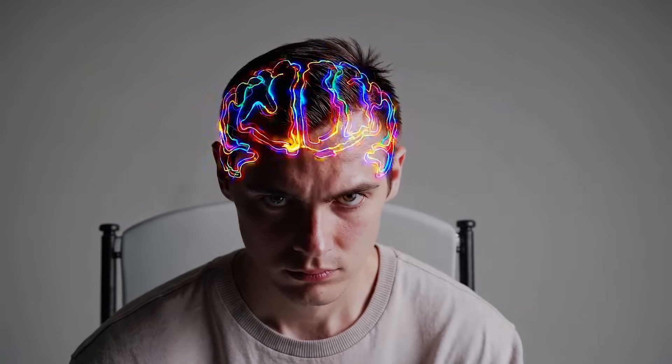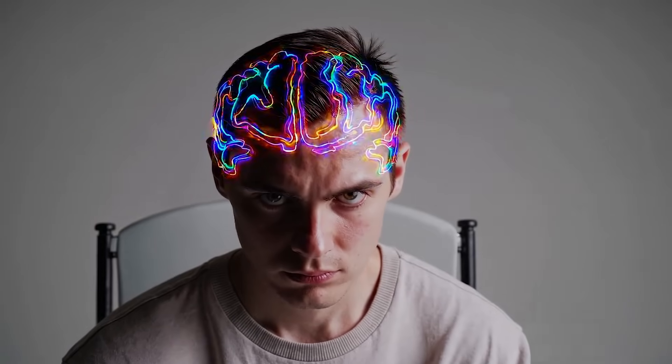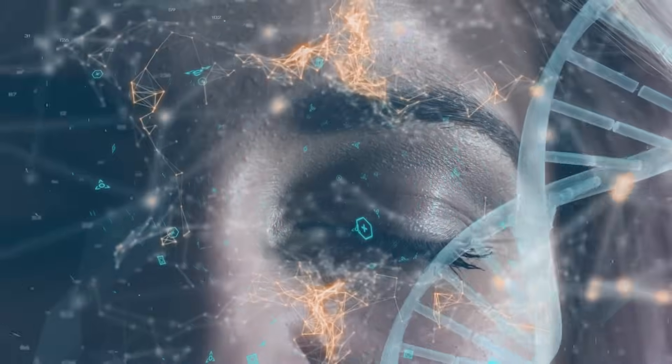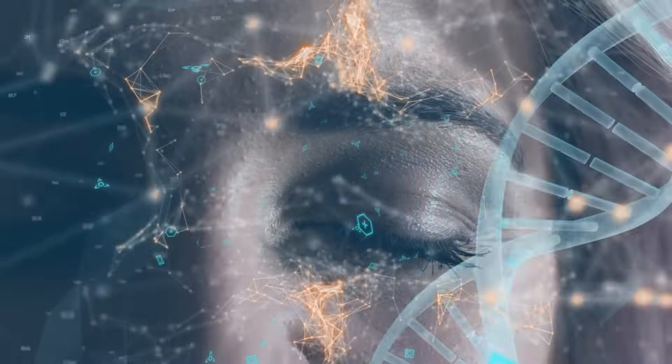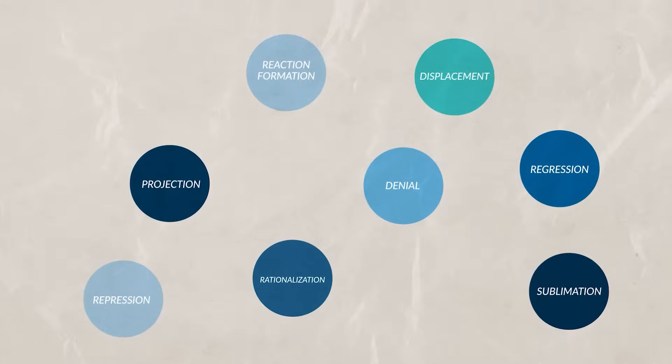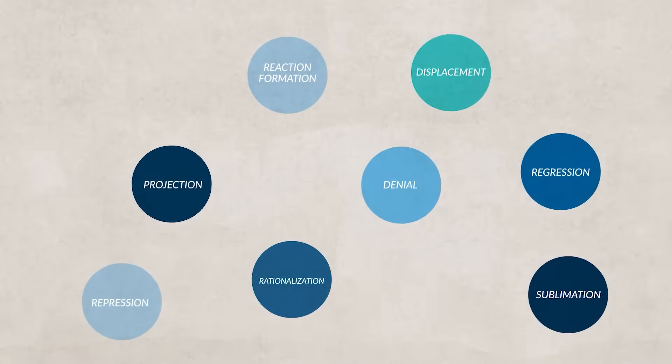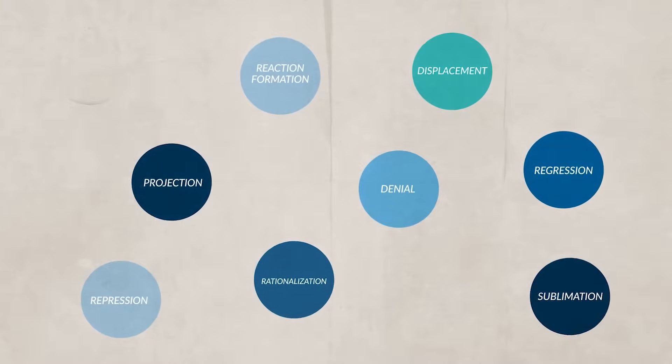The psychodynamic approach often focuses on understanding how the internal conflicts of an individual shape a person's personality, emotional health, and relationships. When looking at the unconscious mind and a person's internal conflicts, we can see the impact of defense mechanisms that are used to help protect an individual's self-esteem. There are eight different defense mechanisms that you want to be familiar with.